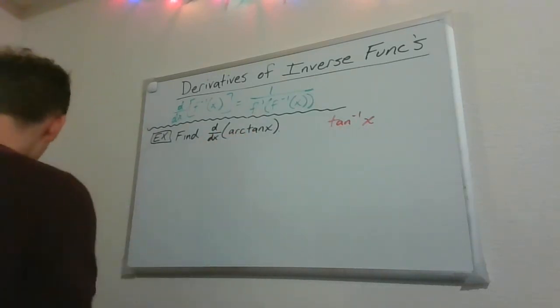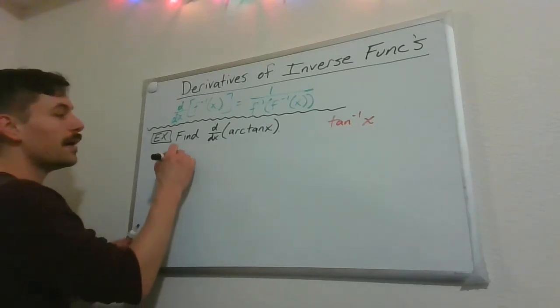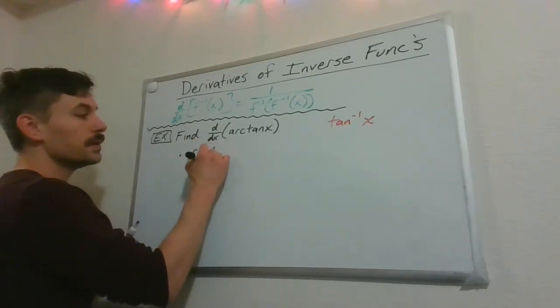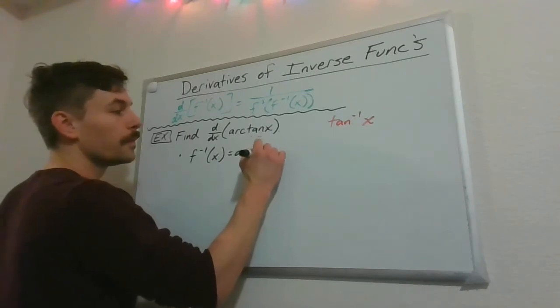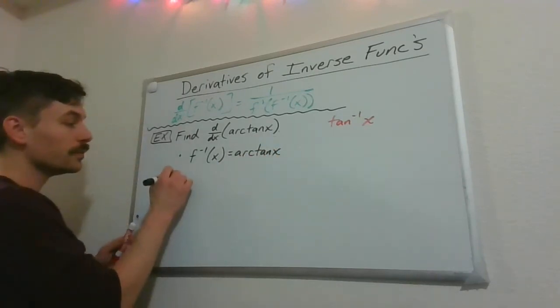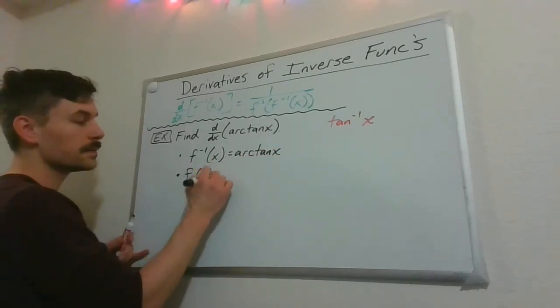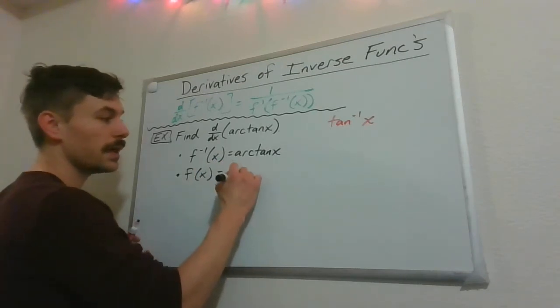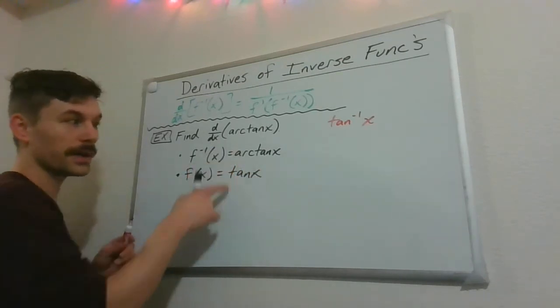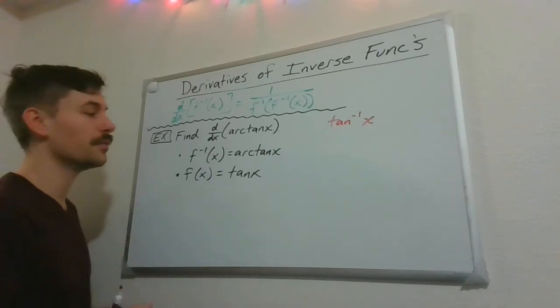So arctan of x, that's going to be our inverse function, which means the original function f(x) we can think about as just tangent of x. And if I compose those two functions, I'll get x out of it.